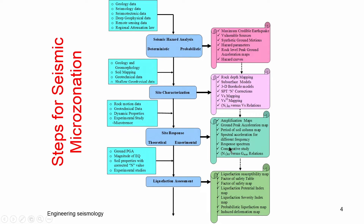The amplified ground motion will cause permanent deformation in the soil, particularly in cohesionless soils where particles tend to move easily. This analysis is called liquefaction assessment, which takes input from the second and third parts — the amplified ground motion and soil data — to identify which areas are liquefiable and which are not. For liquefiable areas, the factor of safety is determined: low factor of safety means very severe, close to one is moderate, and more than one is partially safe.